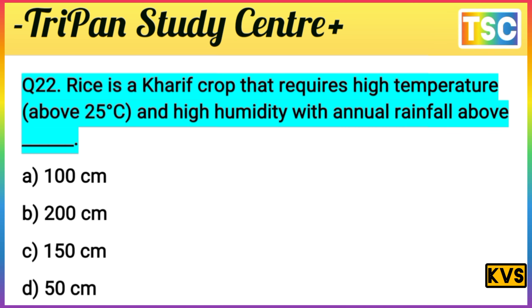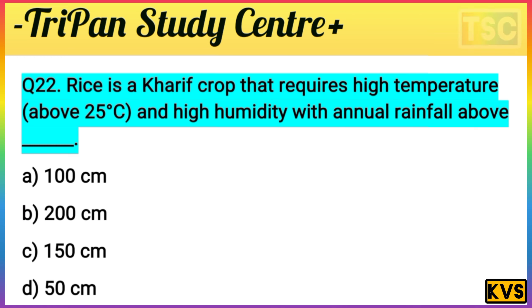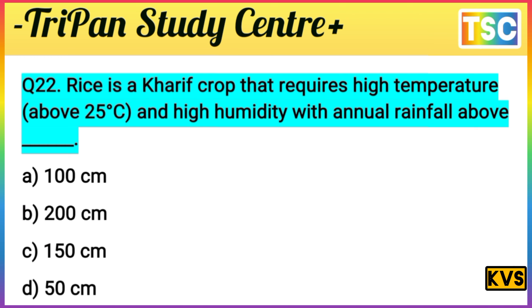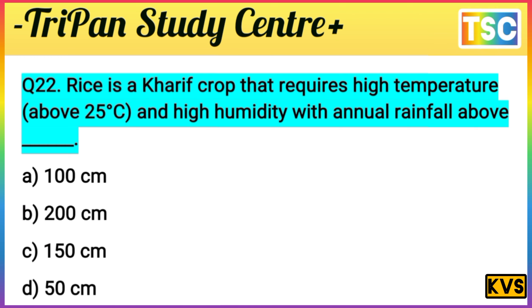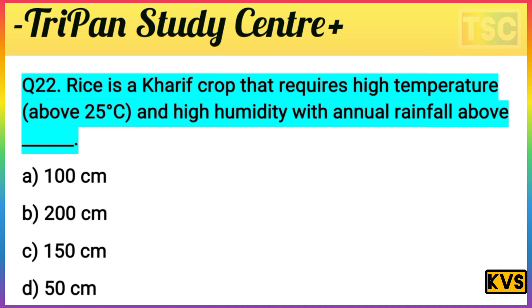Next question on your screen: Rice is a Kharif crop that requires high temperature above 25°C and high humidity. What is the required annual rainfall for growing rice? Option A: 100 cm. Option B: 200 cm. Option C: 150 cm. Option D: 50 cm. Test your knowledge — I give you a few seconds.